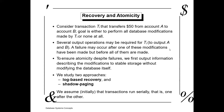The atomicity concept means either all the database modifications should be done or none. That means there should be no case where only the debiting from your account happens without crediting to the other account. Either it should not debit from your account, or it should be credited to the other person's account — no half or incomplete transaction. A failure may occur after one of these modifications has been made, so we have to ensure that atomicity is followed despite all failures.